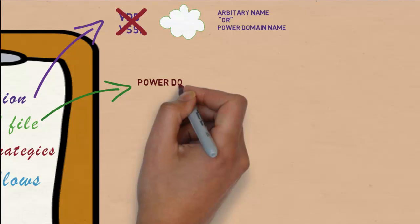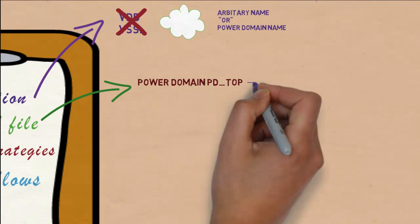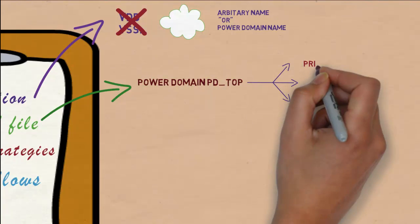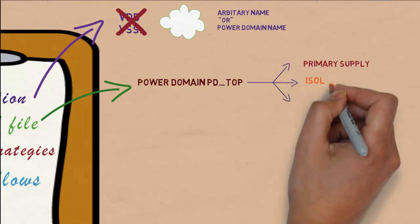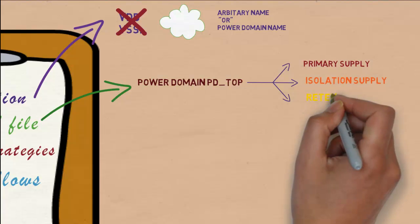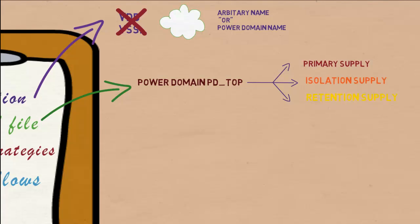In supply set UPF, when we create a power domain, three handles representing the primary supply, isolation supply and retention supply are automatically created.